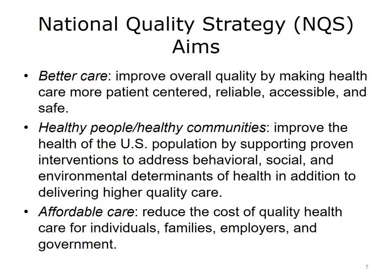Mandated by the Affordable Care Act, the National Quality Strategy, NQS, was developed through a transparent and collaborative process with input from a range of stakeholders to develop national consensus on priorities for quality measurement and improvement. More than 300 groups, organizations, and individuals representing all sectors of the health care industry and the general public provided comments. Based on this input, the NQS established a set of three overarching aims that build on the Institute for Healthcare Improvement's Triple Aim.